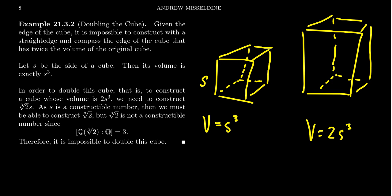Well, the new cube, the duplicated cube, its volume needs to be 2s³. Because volume is just whatever the side length is, we'll call it T for a moment. The volume is likewise T³.